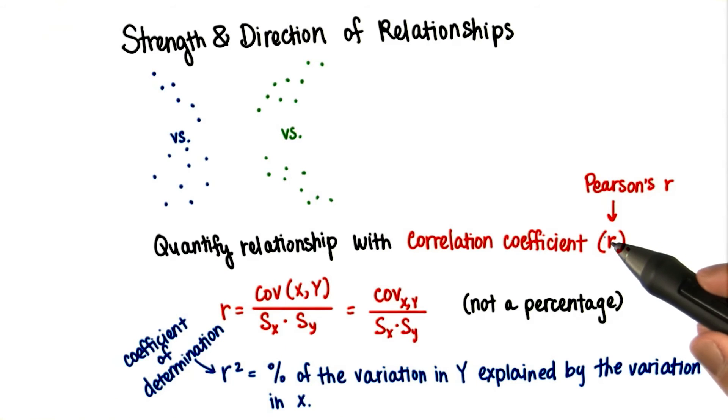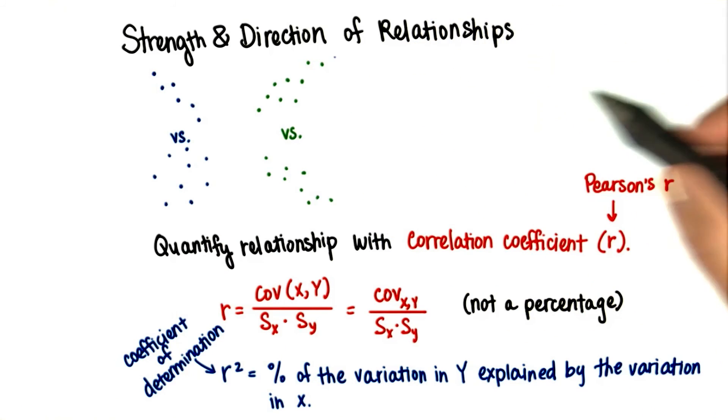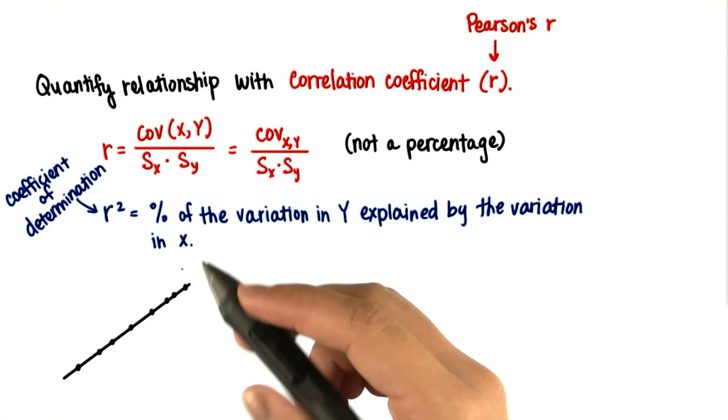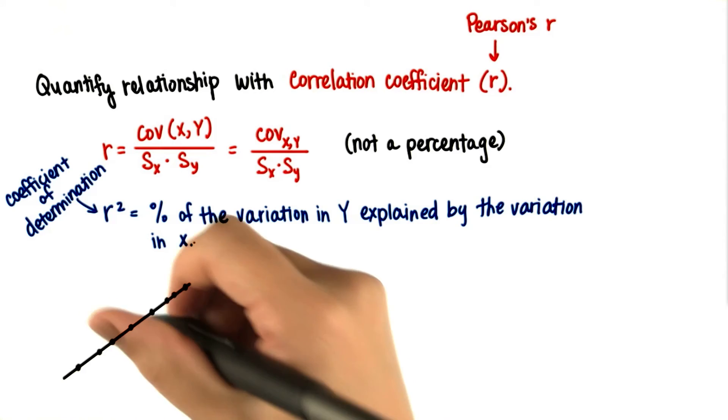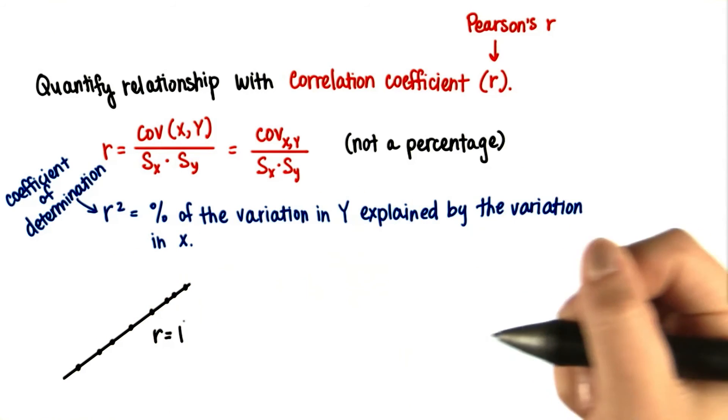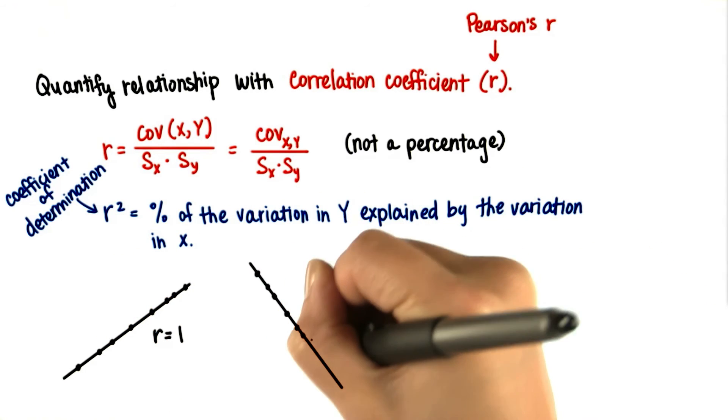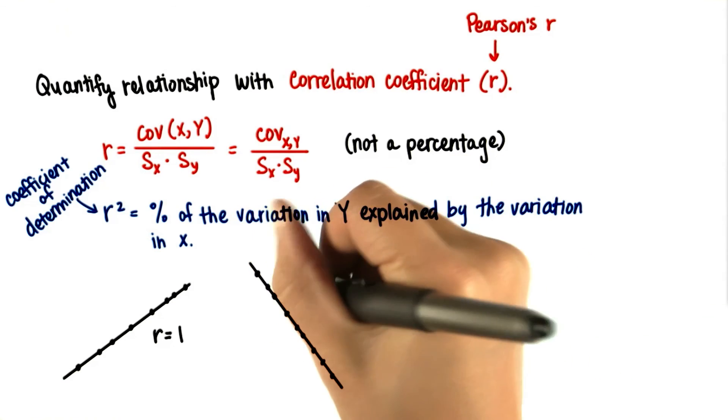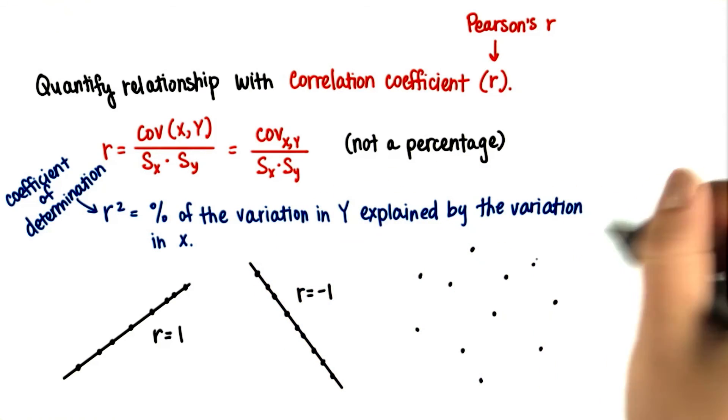R measures the strength of a relationship by looking at how closely the data falls along a straight line. If it falls perfectly along a straight line in the positive direction, then r is positive 1. And if the data fall perfectly along a straight line in the negative direction, r is negative 1. Data that are not correlated at all have a correlation coefficient of 0.